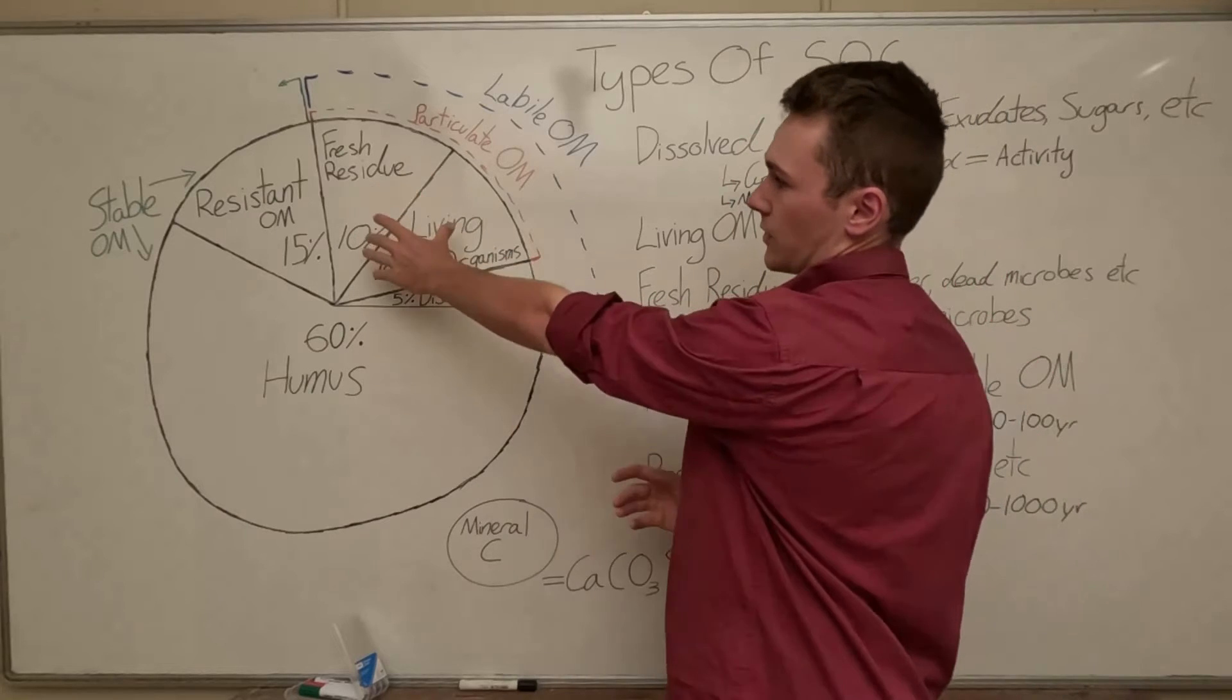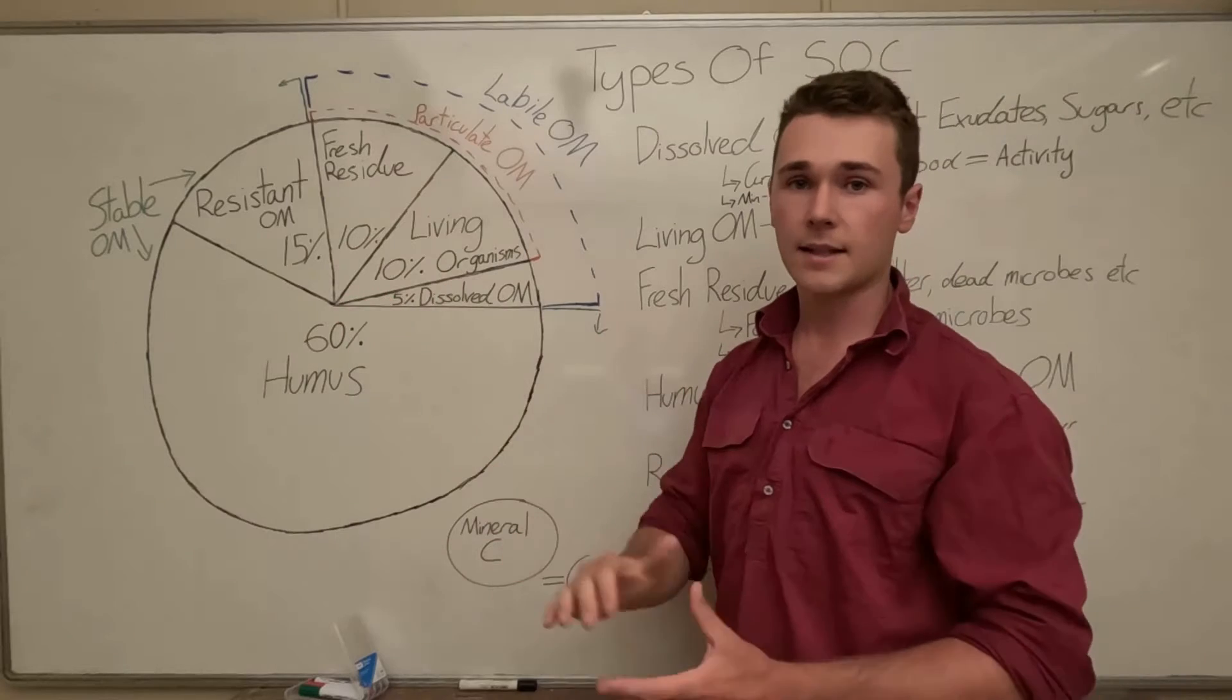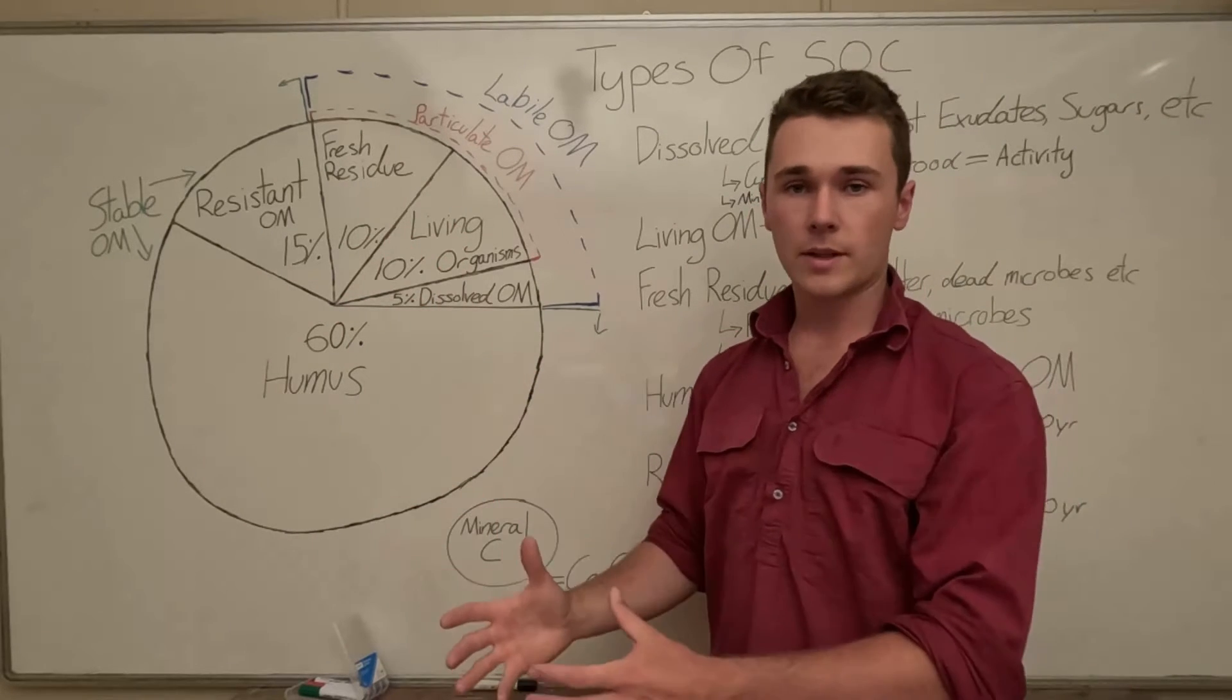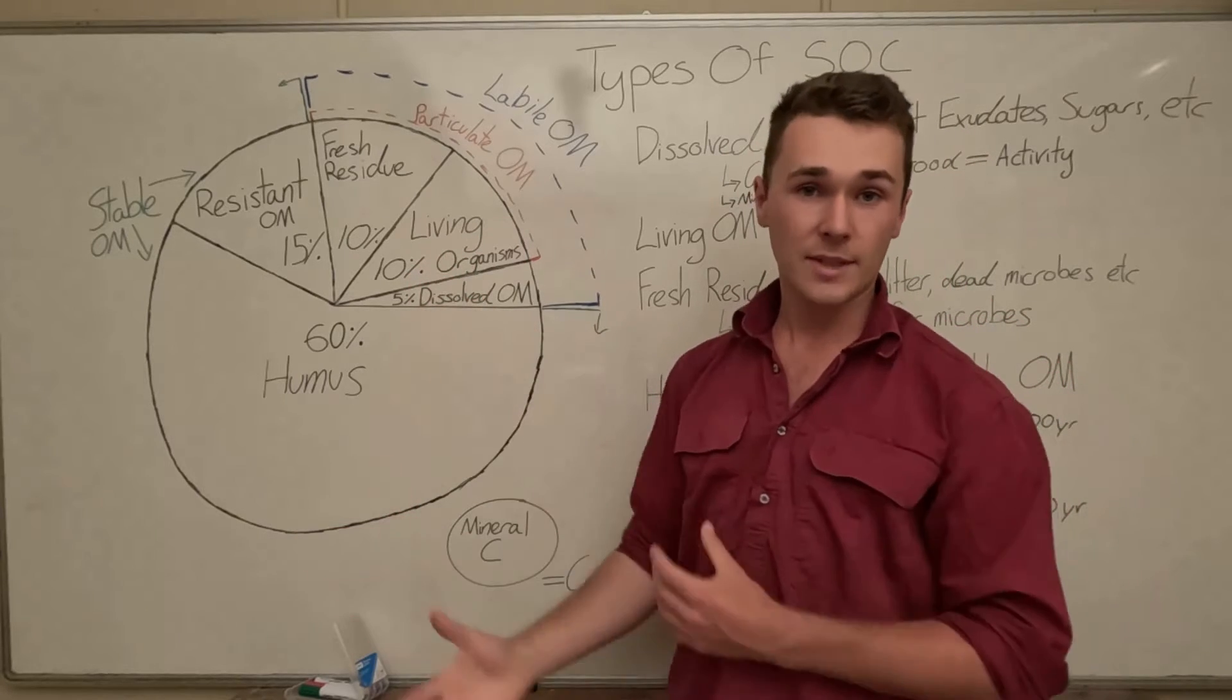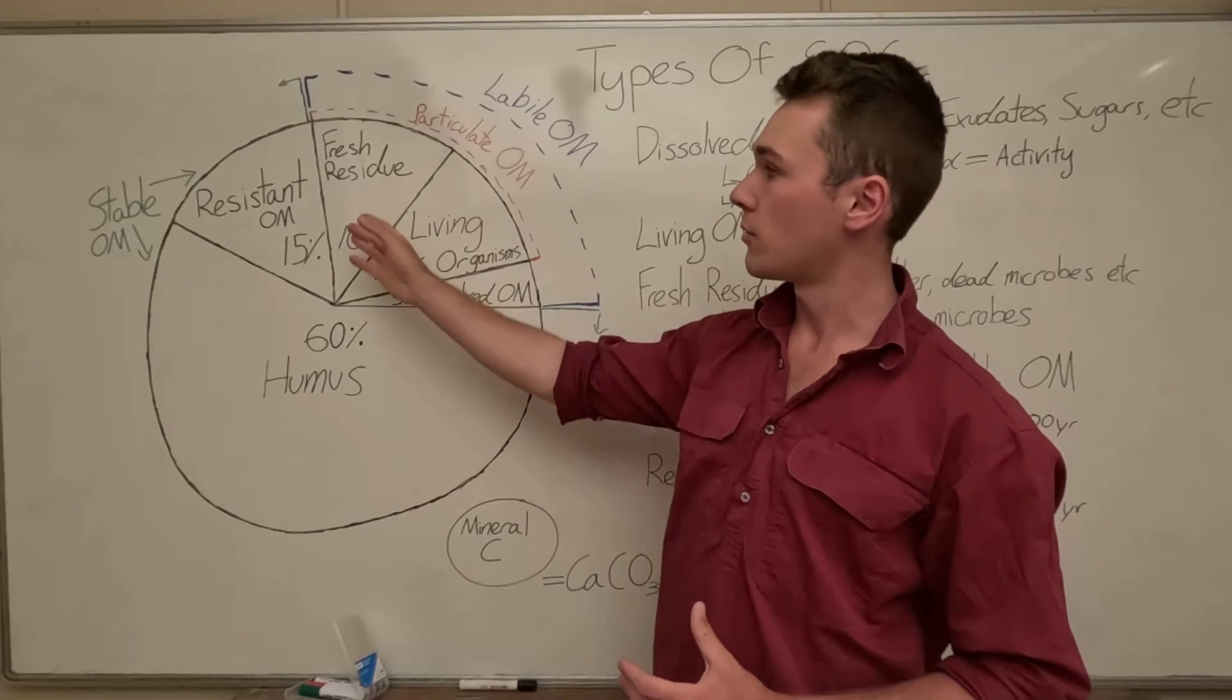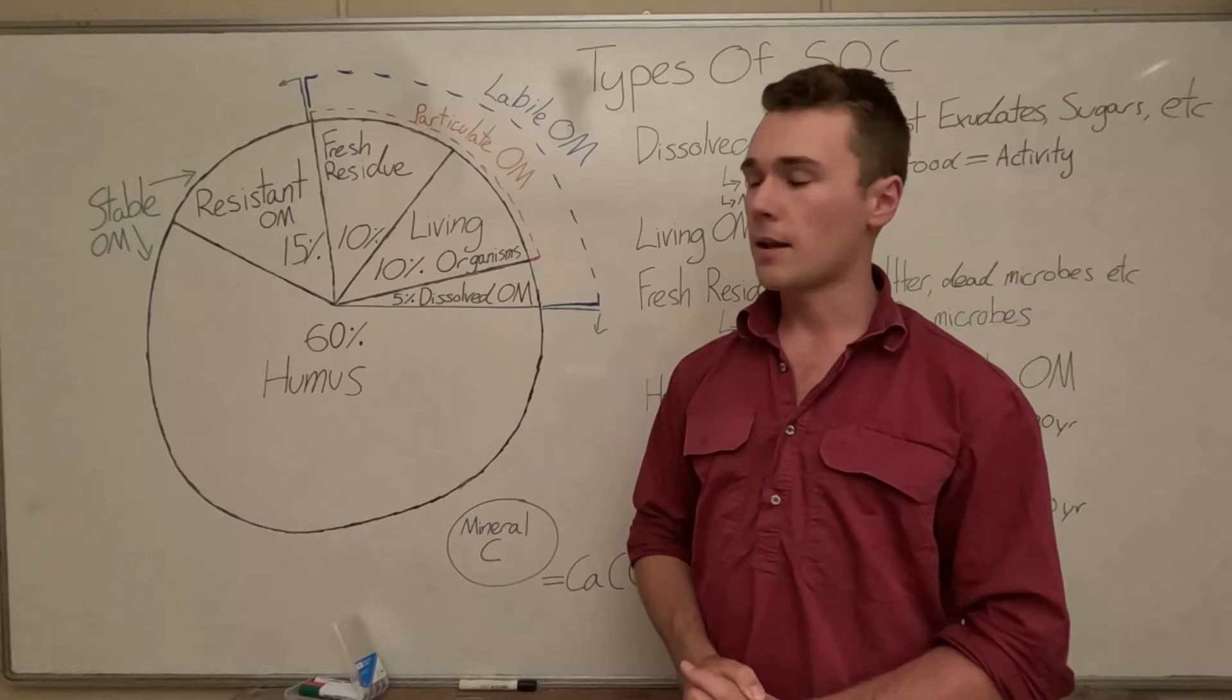Now when we consider fresh residue and living organisms that slice is considered as particulate organic matter. Now these two slices are able to be used by microbes for food so for example some microbes eat other microbes so it's a source of food. When microbes die they turn into fresh residue which can then be consumed by other microbes.